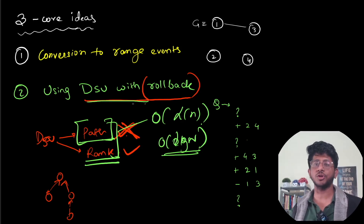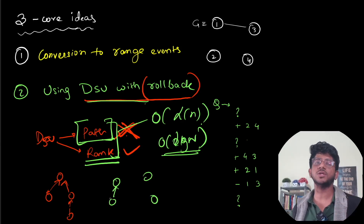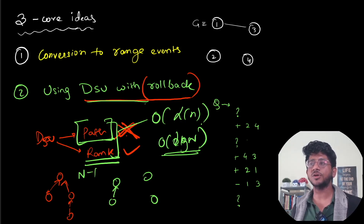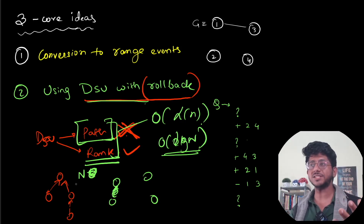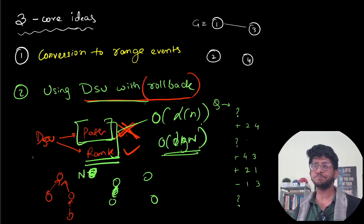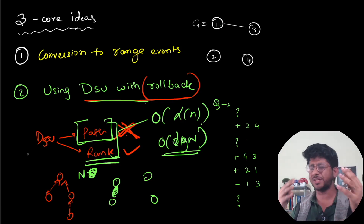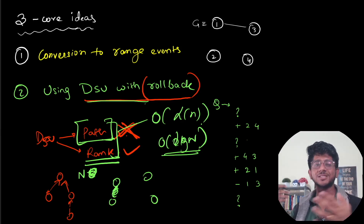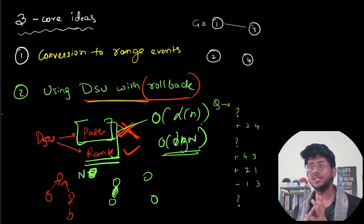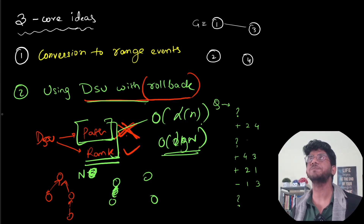DSU with rollback supports: you have a graph, you get an edge, you connect them, and you also maintain in the DSU the number of components. Initially the count is N. As soon as a merge happens successfully — meaning there is a parent change — you decrease this by one. When you revert back, you increase it by one. So you can maintain the number of components using a DSU with only merges and single rollbacks of the last operation. If you use both path compression and rank compression, you get O(alpha(n)); with only rank compression for rollbacks, it's O(log n) per operation.